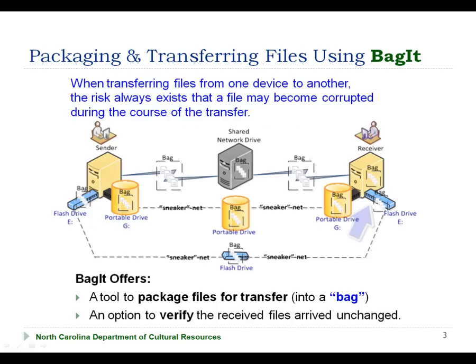However, as files are copied from one device to another, there is always the chance that the data may become corrupted. BagIt provides a program to reliably copy and transfer files between systems, which is important to ensure the validity and authenticity of the transferred files. For stewards responsible for the management of public records, it's critical to ensure that when transferring files from one system to another, they arrive intact and complete.